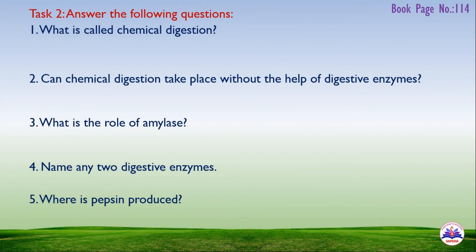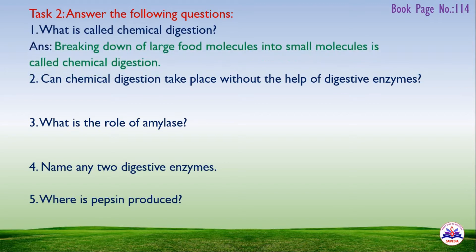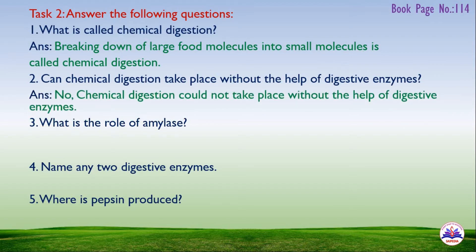Task 2 — answer the following questions. First: what is called chemical digestion? Answer: breaking down of large food molecules into small molecules is called chemical digestion. Second: can chemical digestion take place without the help of digestive enzymes? Answer: no, chemical digestion could not take place without the help of digestive enzymes.